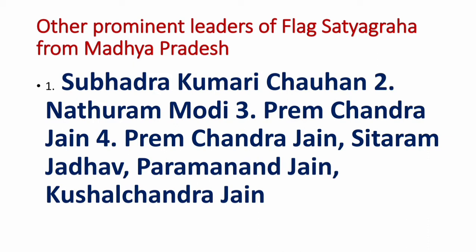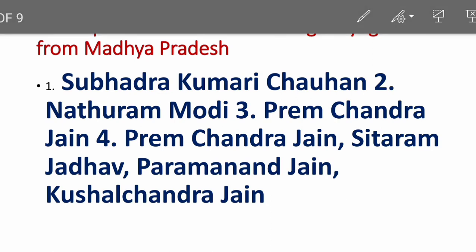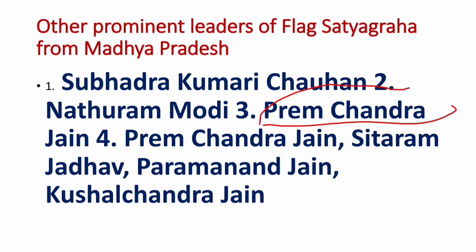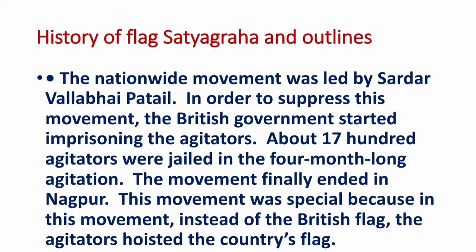Besides Sundarlal Sharma, other important leaders who participated in the Flag Satyagraha of Madhya Pradesh include: Subhadra Kumari Chohan, one of the most famous writers; Nathuram Modi; Prem Chandra Jain; Sitaram Jadhav; Parmanandran; and Kusal Chandra Jain. Notably, Prem Chandra Jain, who belonged to Damoh, was the person who put the Indian flag on the building of the British Commissionary in Jabalpur, and was subsequently arrested.